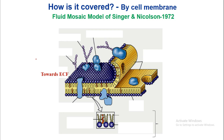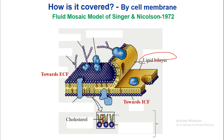In the diagram, you are seeing the structure of the cell membrane. This part is towards the ECF — extracellular fluid, the fluid present outside the cell. This part is towards the ICF — intracellular fluid, the fluid present inside the cell. This part is on the inner side of the cell, and this part is on the outer side. This is the lipid bilayer; in between the phospholipids, cholesterol is present.